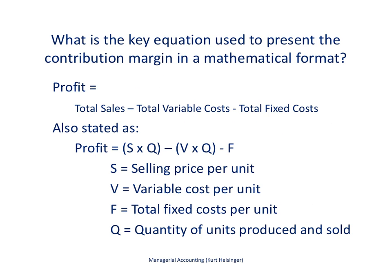This slide shows the key equation used to present the contribution margin in a mathematical format. Profit equals total sales minus total variable costs minus total fixed costs — that is, total revenue minus all costs including variable and fixed. Total sales equals the selling price per unit times the quantity of units sold, minus the variable cost per unit times the quantity of units sold, minus total fixed costs.